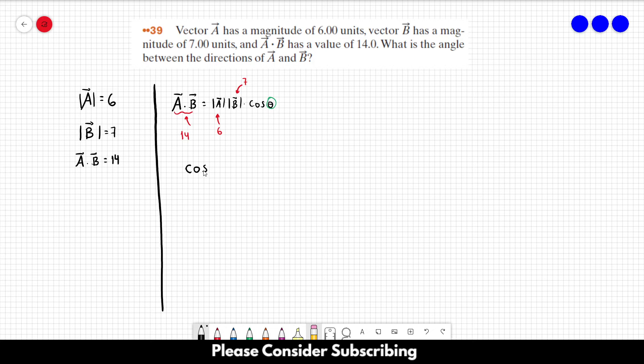So the cosine of the angle is equal to A dot B over the magnitude of vector A times the magnitude of vector B. So let's replace the letters by the numbers, and then we have 14 over 7 times 6. And this gives us 0.333 and so on.